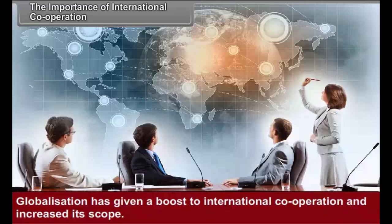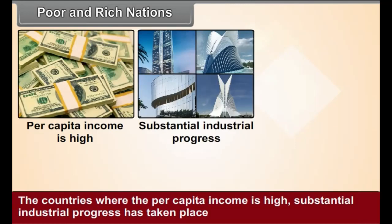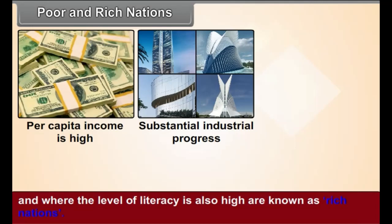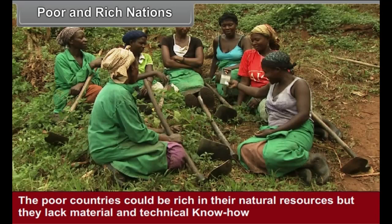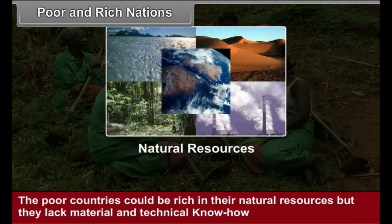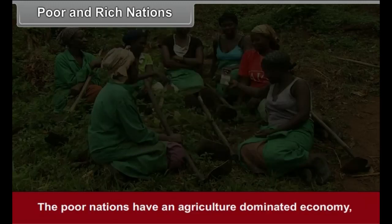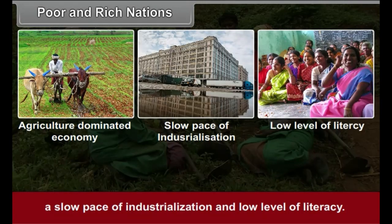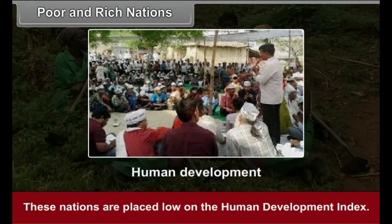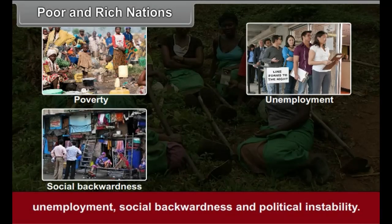Globalization has given a boost to international cooperation and increased its scope. The countries where the per capita income is high, substantial industrial progress has taken place and where the level of literacy is also high are known as rich nations. They enjoy a relatively high standing on the Human Development Index. The poor countries could be rich in their natural resources but they lack material and technical know-how and therefore are not able to use these resources for their economic development. The poor nations have an agriculture dominated economy, a slow pace of industrialization and low level of literacy, and are placed low on the Human Development Index. They also have to take special efforts to solve the problems of poverty, unemployment, social backwardness and political instability.